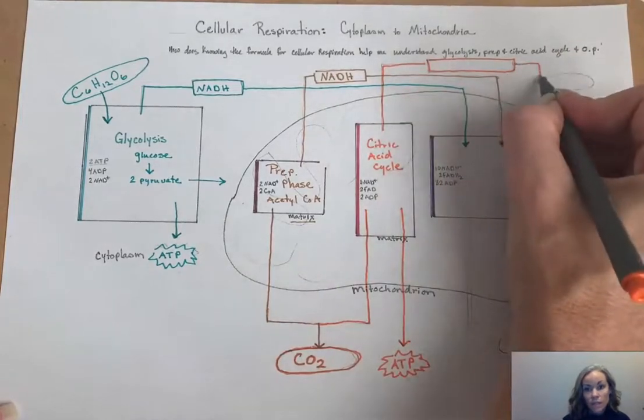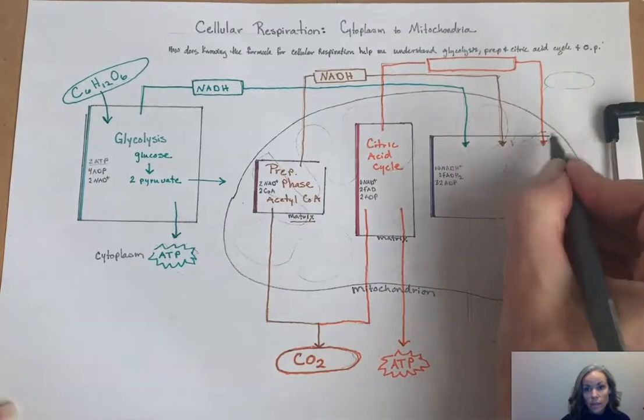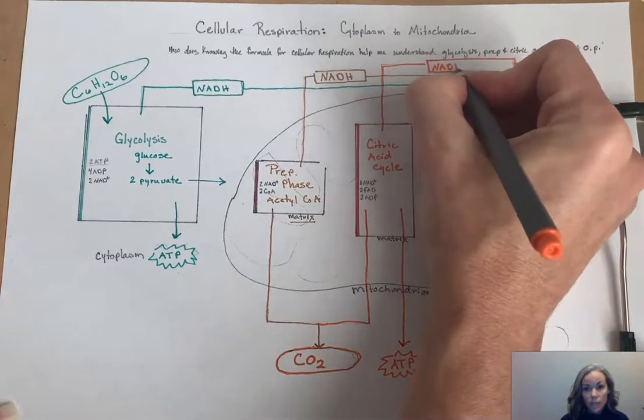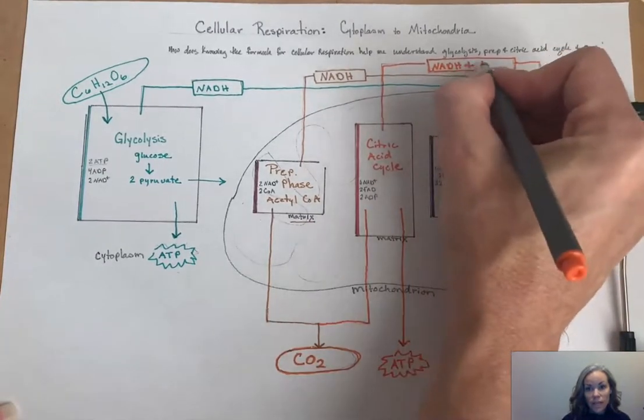Here the citric acid cycle doesn't just make NADH, but also makes FADH2. So NADH, energy-rich molecule, and FADH2.